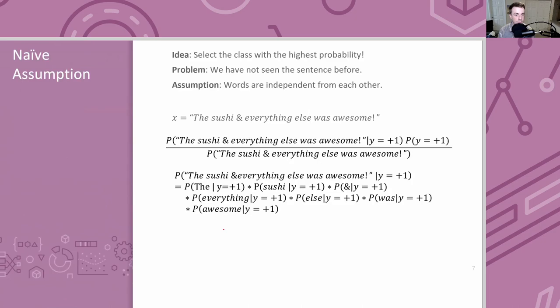So there are two big ideas in Naive Bayes. The Bayes' Rule idea: to compute the probability of positive sentiment given a sentence, flip the question and ask what's the probability of seeing the sentence given it's positive. The naive part: to compute the probability of a sentence, break it up into a product of the individual probabilities of its words — assuming no relationship between words.